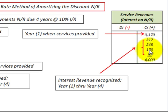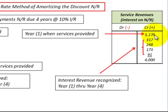The present value of the services provided is thirty-one seventy, and when you add the total interest earned over four years, you get four thousand dollars of total service revenues recorded across the life of the note.